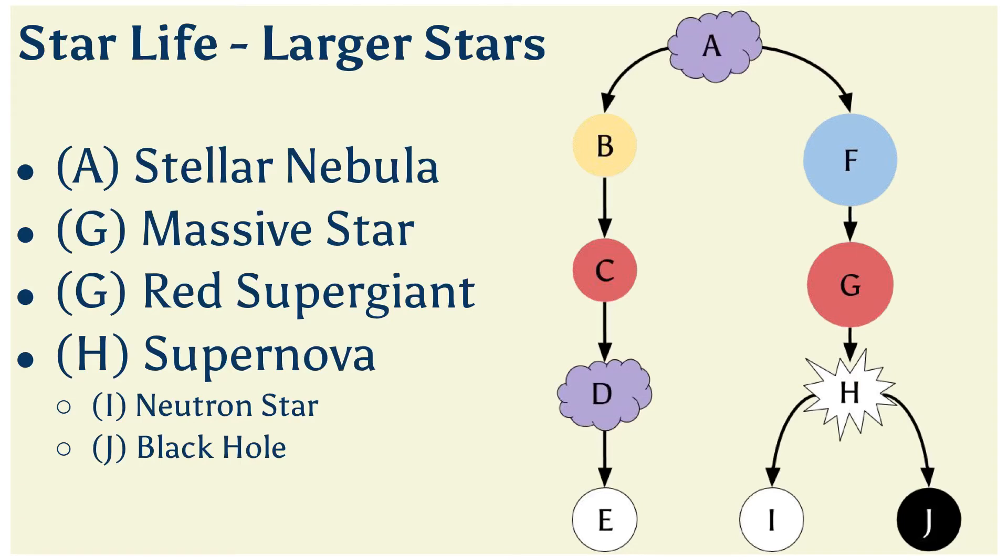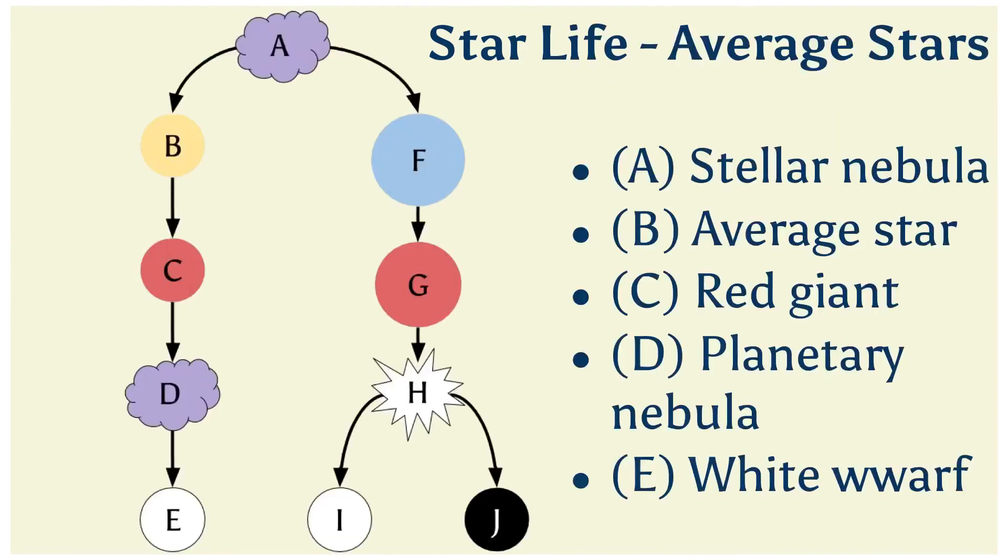Again, that would have to be a different lesson, though. Okay, up next is the life of an average star. Again, using our same diagram here, we start off with the stellar nebula. Stellar nebulas form, if we have a smaller amount of dust particles and so on, we're going to have an average sized star.